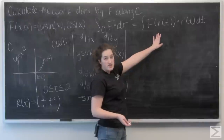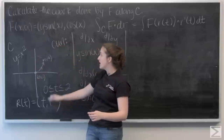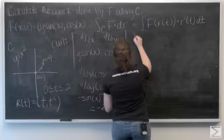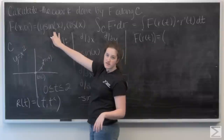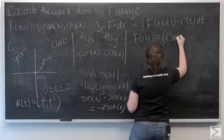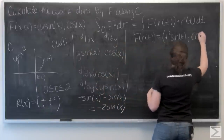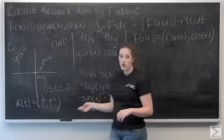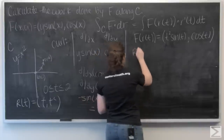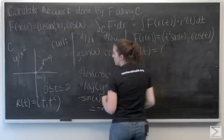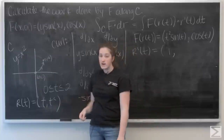I need to find f of r(t). To do that, I plug in the i component of r everywhere I see an x in f, and the j component everywhere I see a y. So f(r(t)) equals (t² sine of t, cosine of t). Now let's find r prime — that's the derivative with respect to t for each component. The derivative of t is 1, and the derivative of t squared is 2t. So r'(t) = (1, 2t).